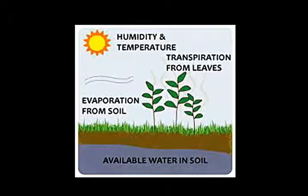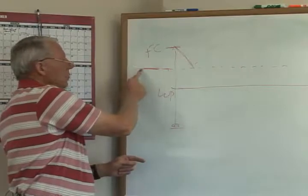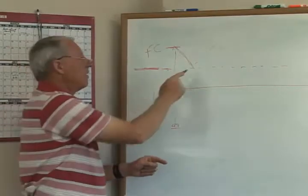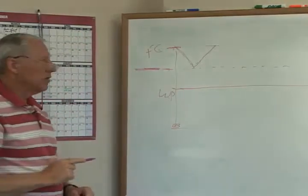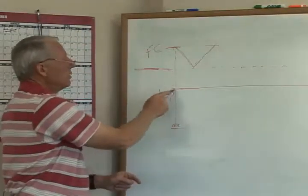As the plant uses that water and gets close to this management level, it's time for us to irrigate again and bring it back hopefully close to field capacity. We don't ever want it to get to wilting point.